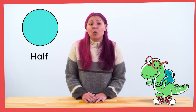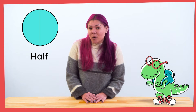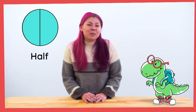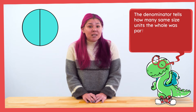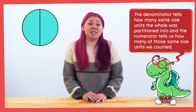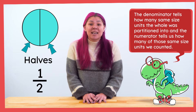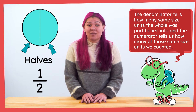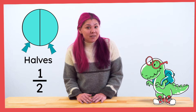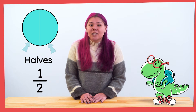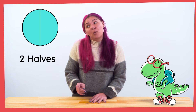So each person will get one piece of cake. In fractions, we have a numerator and denominator. The denominator tells us how many same-size units the whole was partitioned into, and the numerator tells us how many of those same-size units we counted. When we say one-half, we're communicating that the size of each piece is a half of the whole and we've counted one of those halves. Even though we cut the cake into two parts, we call those pieces halves. So when you see a fraction with a denominator of two, you say halves. I would say these fractions as two-halves, one-half, and three-halves.